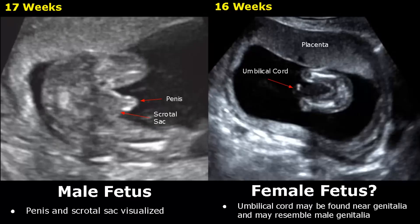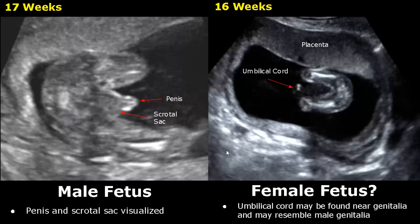Hello everyone, this is Dr. Sam and today we will study fetal gender determination on ultrasound. Fetal gender can usually be determined around 16 weeks of gestational age. In some cases, it can be difficult to determine the gender at this stage because of fetal position that makes it difficult to visualize the genitalia properly.